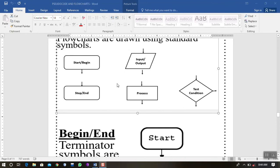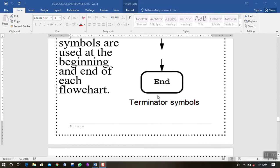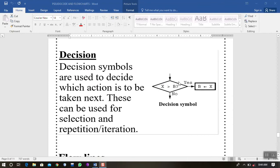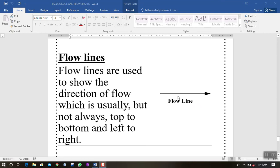These are the basic symbols that we use. We have the start and end, the process symbol, the input-output symbol, the decision table, and the flow lines. Decisions are used to decide which action to be taken next.